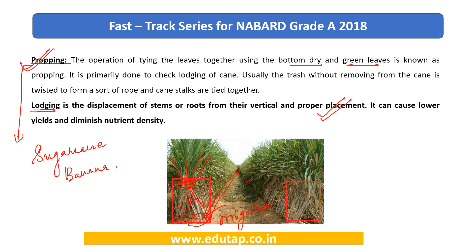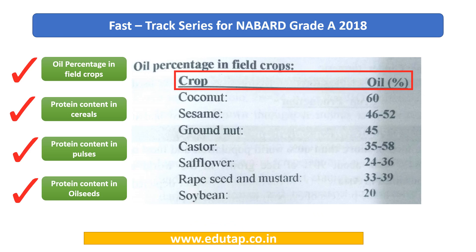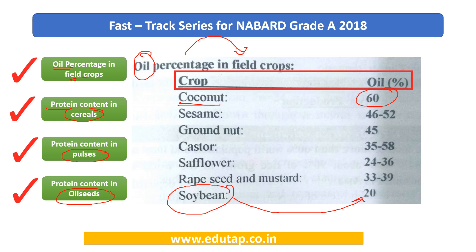Next, we look at the oil percentage in field crops, the protein content in cereals, in pulses, and in oil seeds. In this chart, you can see the oil percentage in various field crops. The highest is coconut at 60%. Soya bean is nearly about 20%. You should have a rough idea: among all these crops, coconut has the highest oil percentage. Groundnut is mostly used and nearly 45% of it is oil.